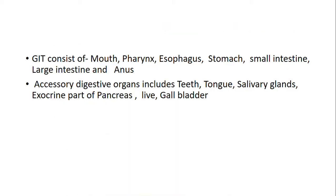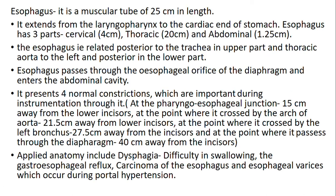The GIT consists of mouth, pharynx, esophagus, stomach, small intestine, large intestine and anus. The accessory digestive organs include teeth, tongue, salivary glands and exocrine part of pancreas, liver and gallbladder. The esophagus is a muscular tube of 25 cm in length.